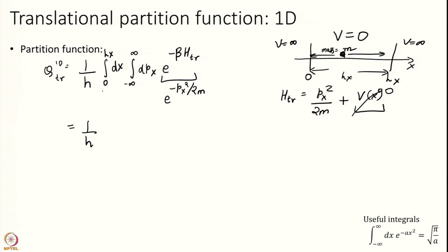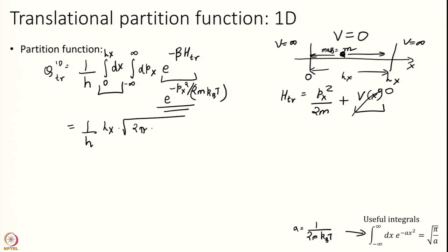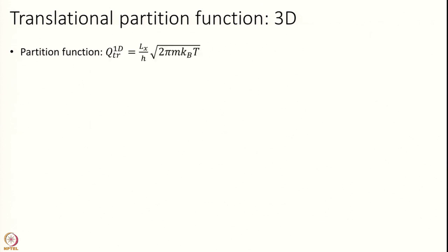This integral can be done quickly. Note there is no dependence on x at all, so the x integral gives Lx. The momentum integral is a Gaussian integral — the formula is provided here and you do not have to memorize it. Comparing, a equals 1 over 2m·k_B·T, so I can straightforwardly substitute and get the result (2π m k_B T)^(1/2). So I get the translational partition function in 1D. But our problem is in 3D.